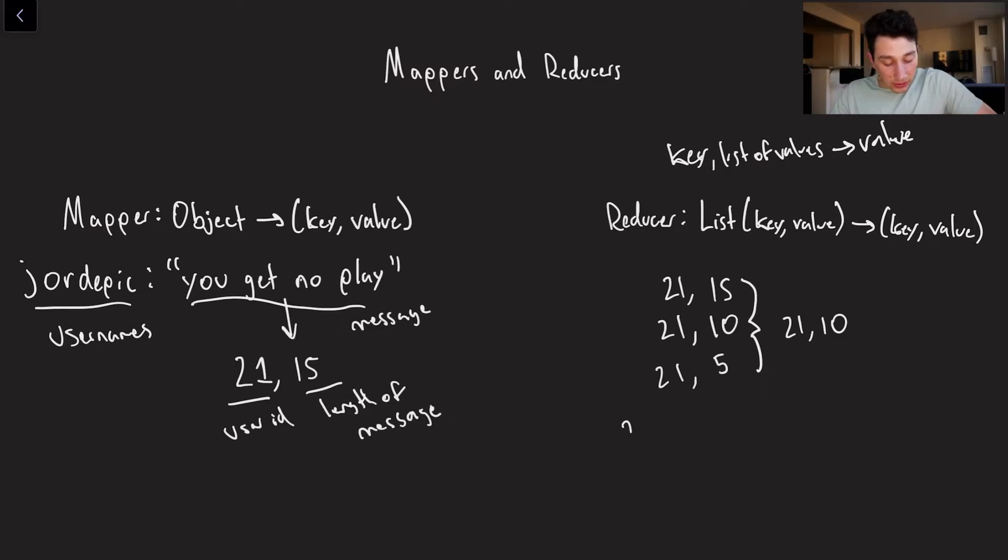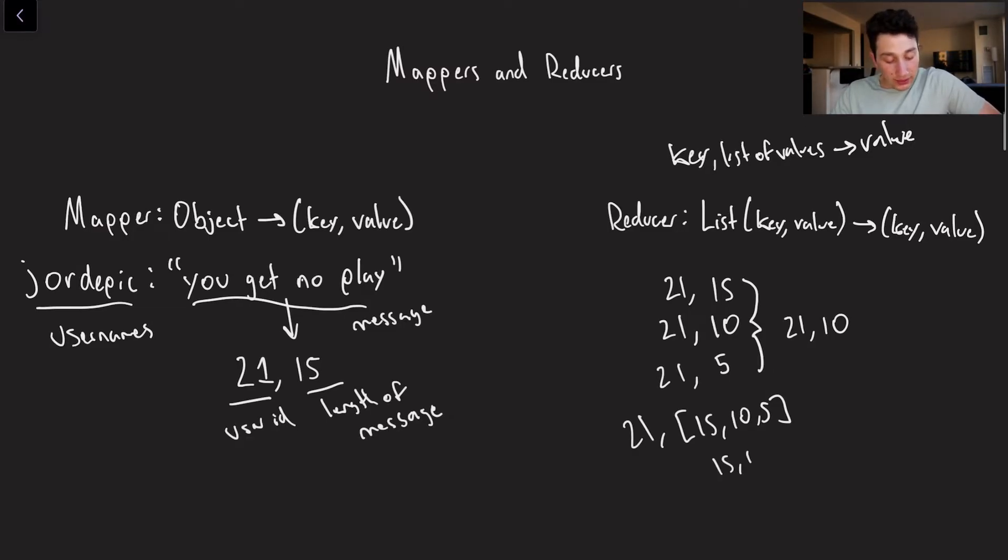So in this case, we can see the key is going to be 21, the list of values is going to be 15, 10, and 5. And what it's going to do is let's say this is a reducer that computes the average of those values. So take the sum of those and then divide by 3. And that's how you get 10. So that's kind of what the reducer is doing. So basically, by just defining a mapper and a reducer, we can express all sorts of complicated functionality.